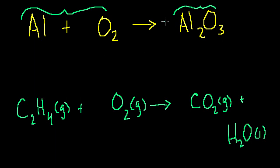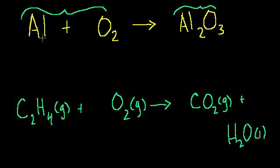Well, there's a problem here. The way I've written it, I have one atom of aluminum plus two atoms of oxygen — one molecule of diatomic oxygen, but they have two oxygen atoms. On the product side, I have two atoms of aluminum and three atoms of oxygen. So I have a different number of aluminums on both sides, and a different number of oxygens. Balancing equations is all about fixing that problem — having the same number of each atom on both sides.